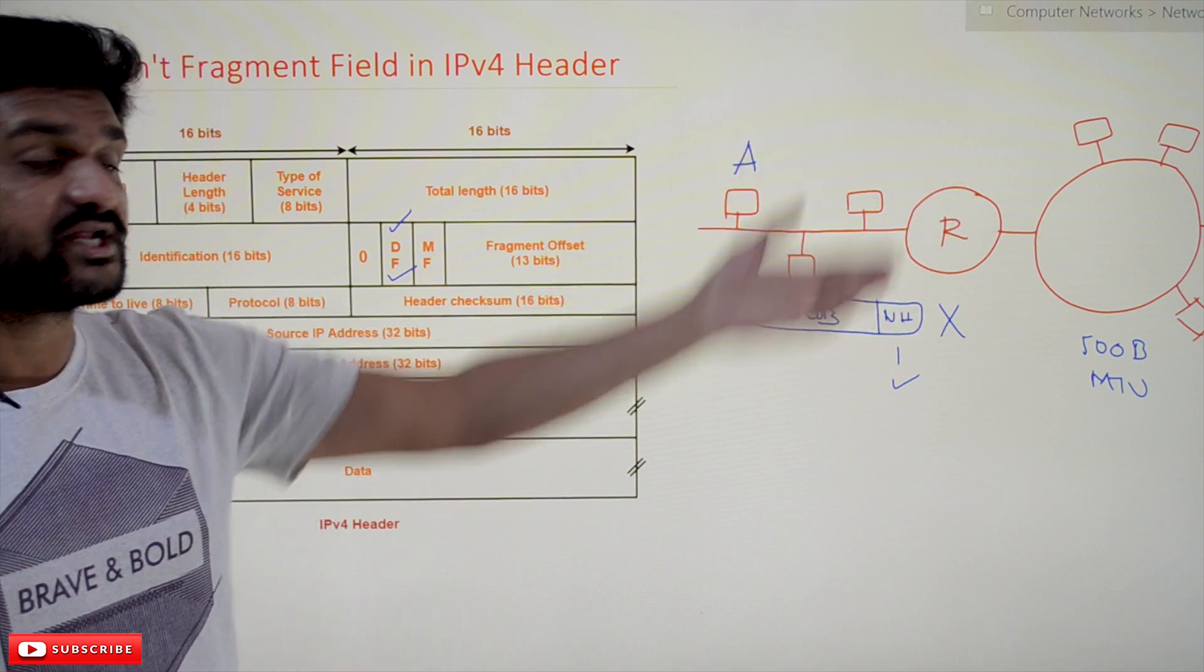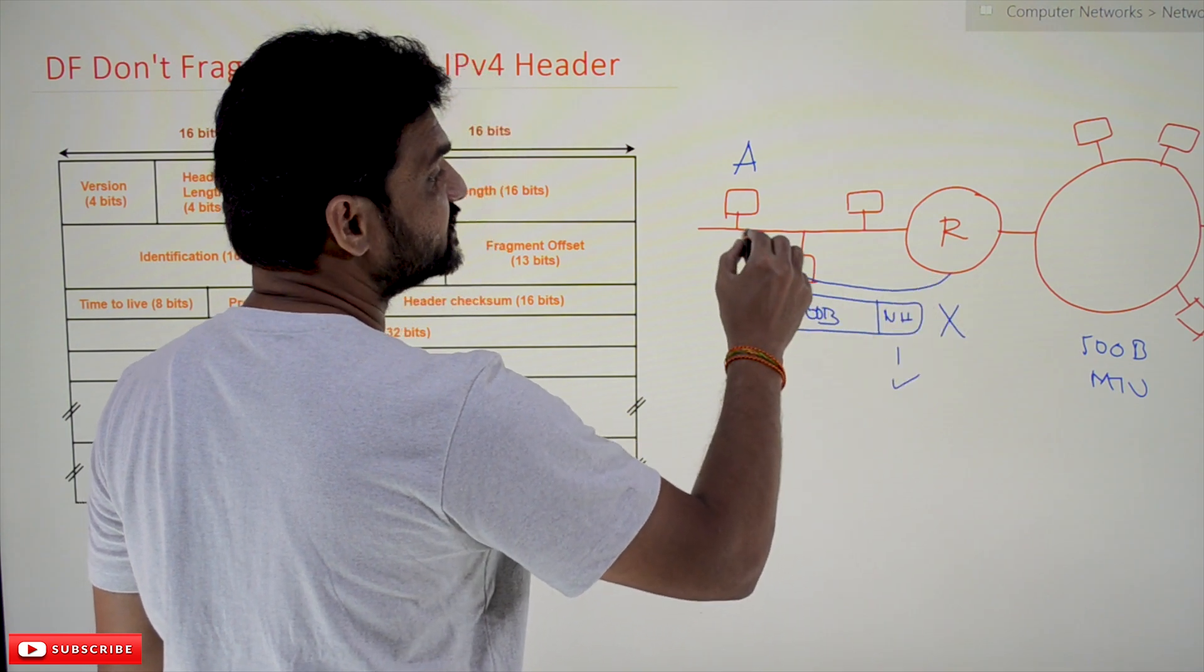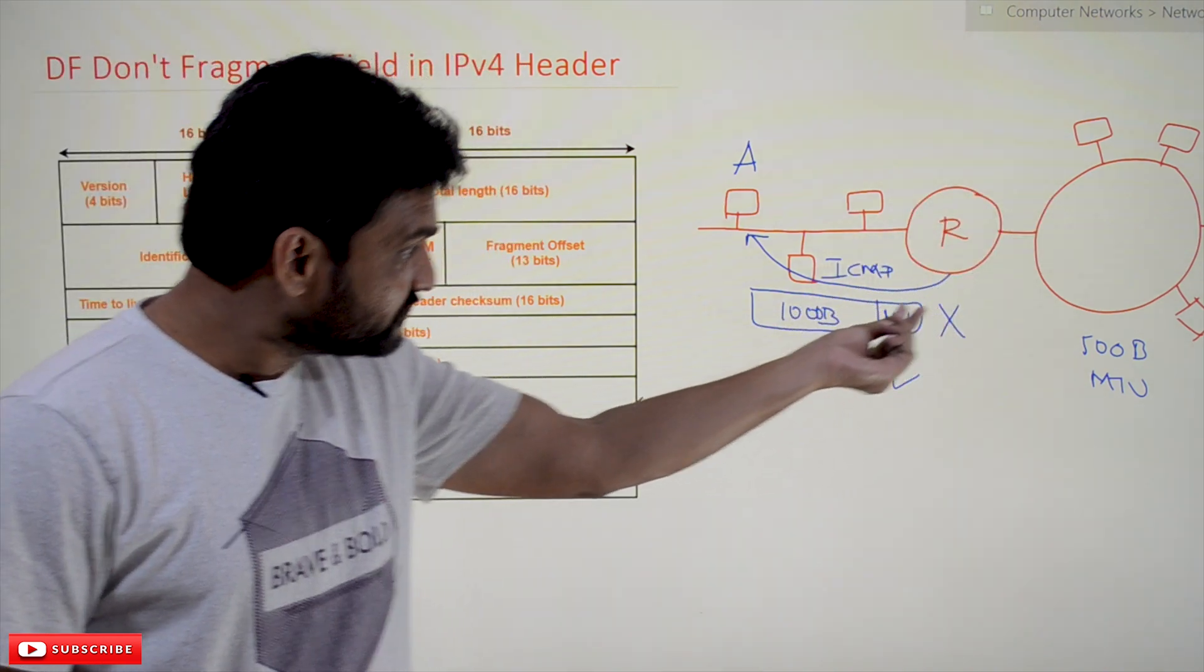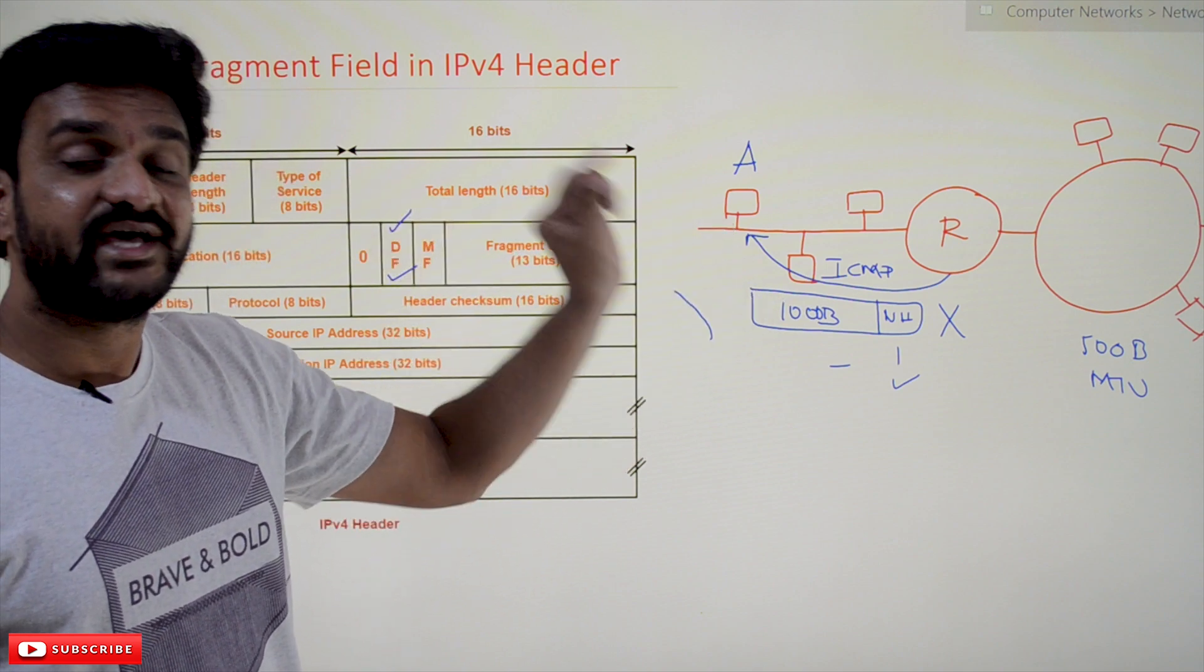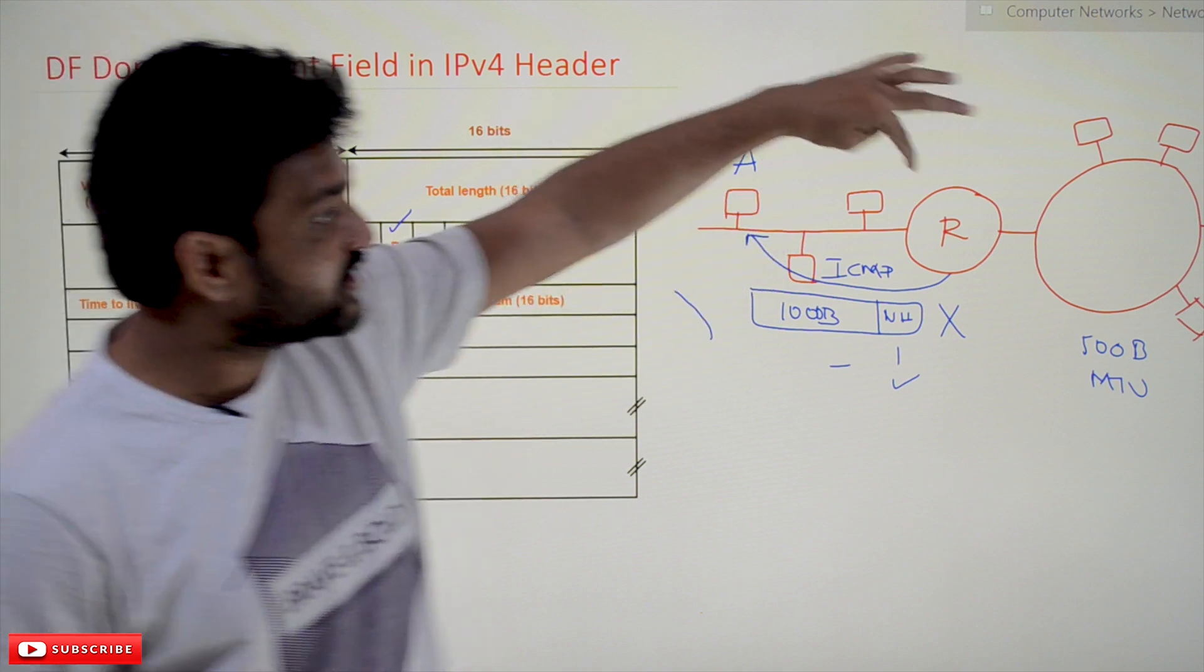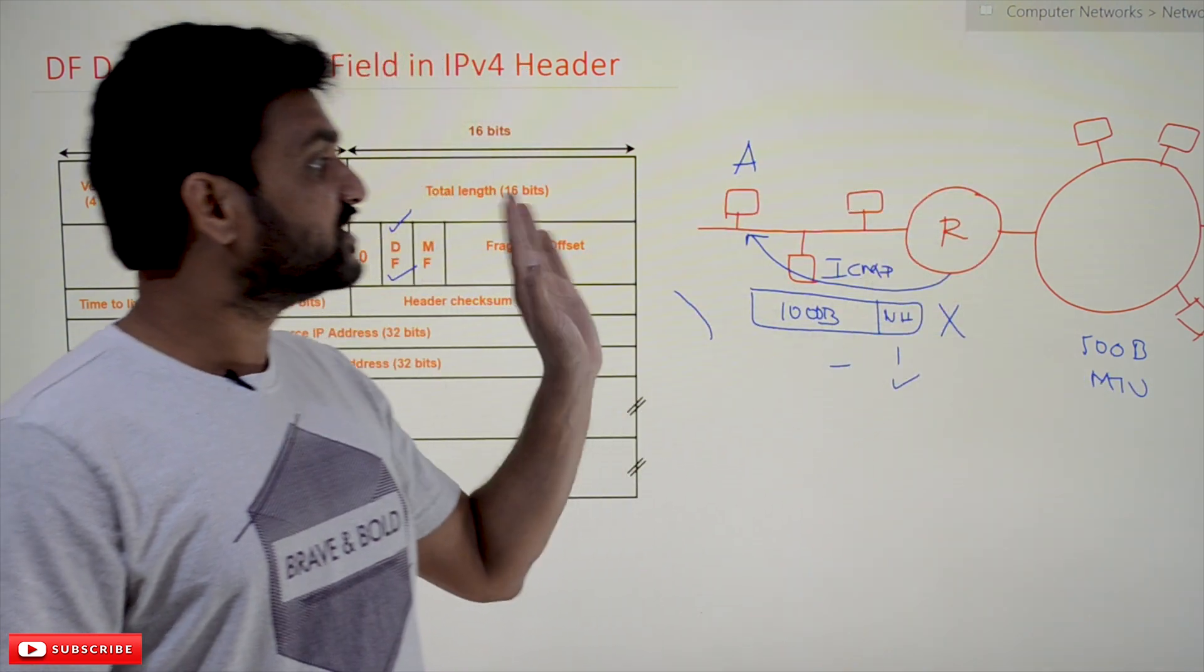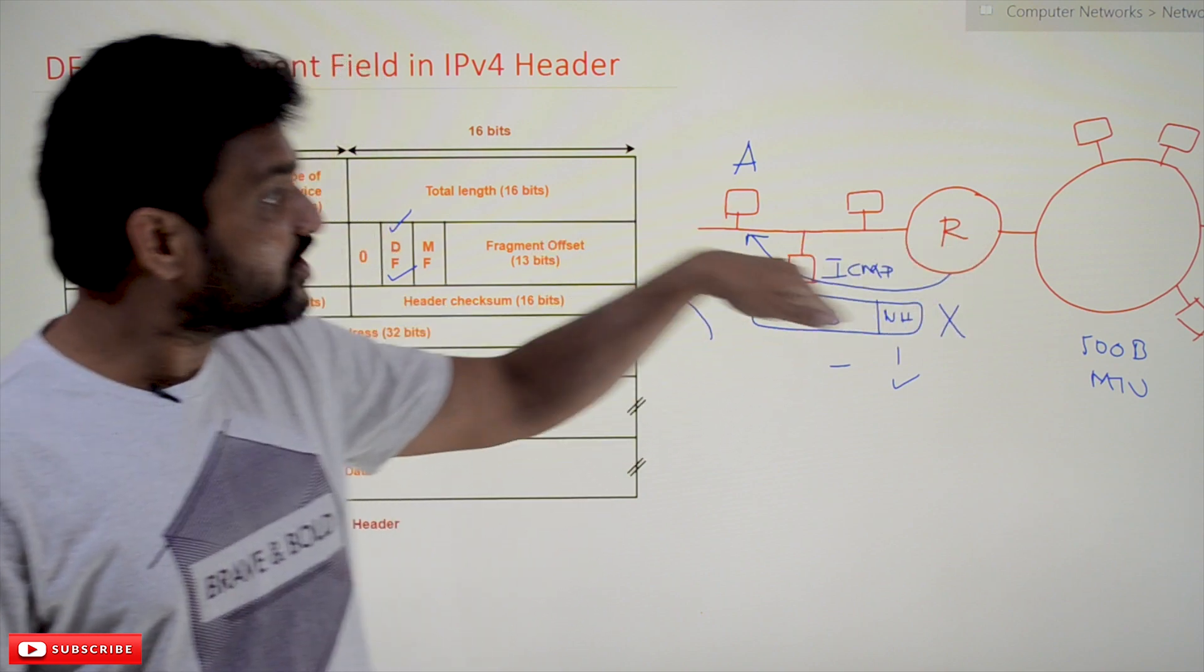In response, the router will send an error message—an ICMP message. We will discuss this concept in later videos. The router sends an error message stating: 'You have set the DF bit to 1, but there is a need for me to fragment into 500 bytes, so I cannot transmit it. Please make a note of it.' This is the message sent by the router to the sender.